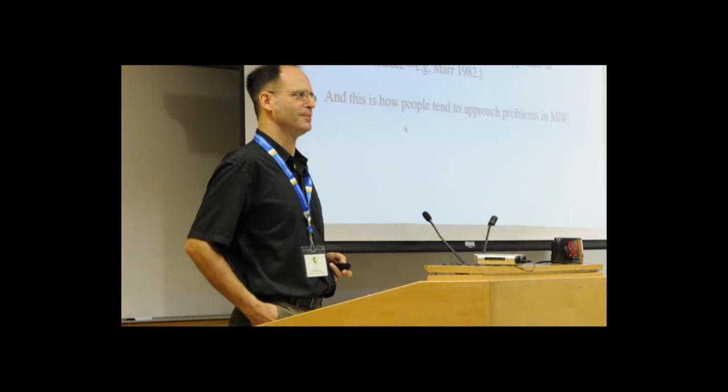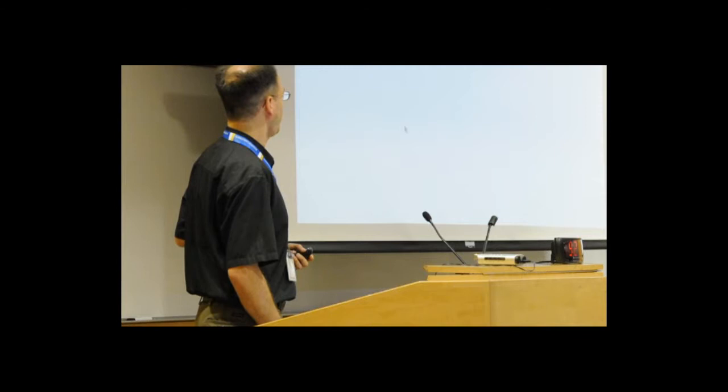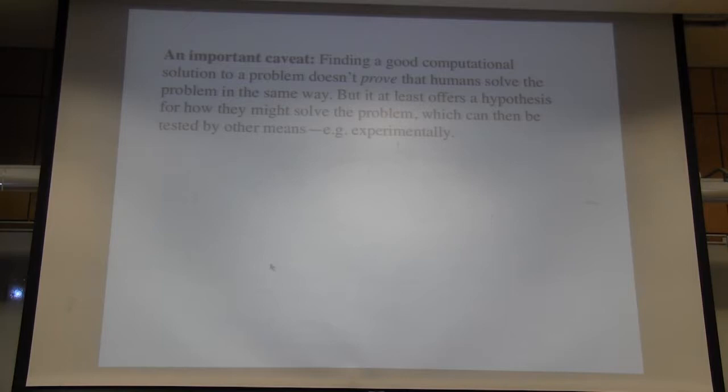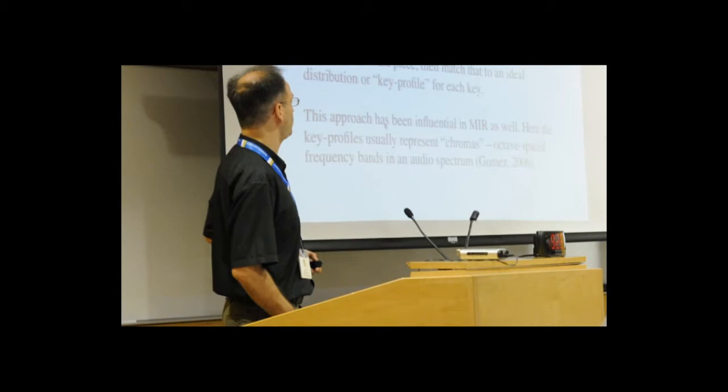Part one: how MIR can help music cognition. In music cognition, we often want to know how humans perform a particular process, like a perceptual process. We can approach this from an experimental viewpoint, but we can also approach it computationally — just asking what has to be done to perform the process in the easiest and most effective way. This is a well-known approach in cognitive science, most famously in David Marr's work on vision. And of course this practical problem-solving approach is also how people approach problems in MIR. That's really how MIR research can contribute to music cognition.